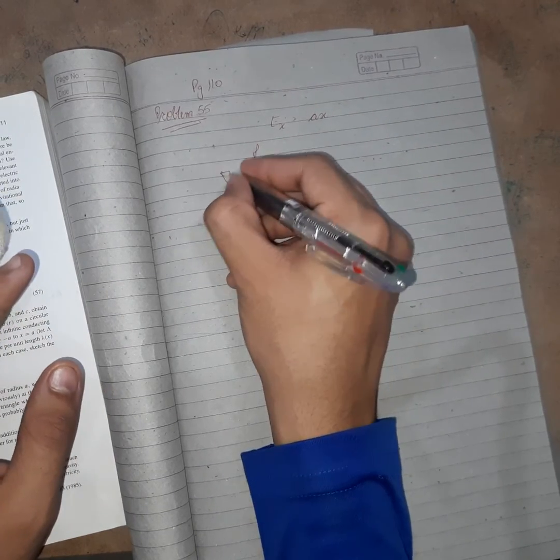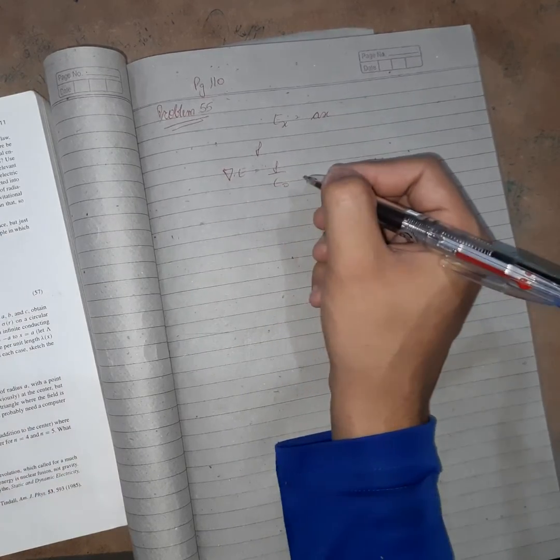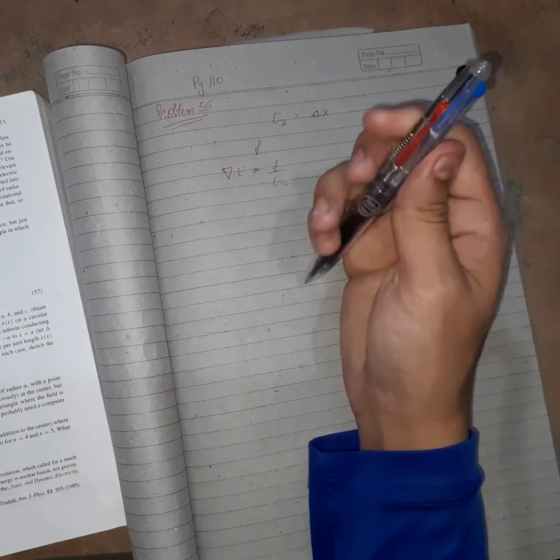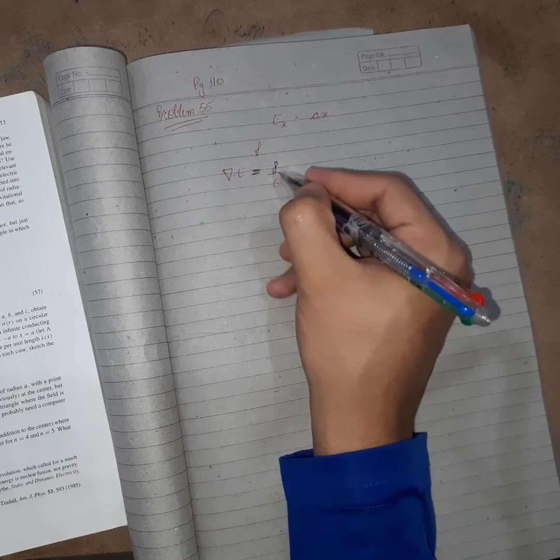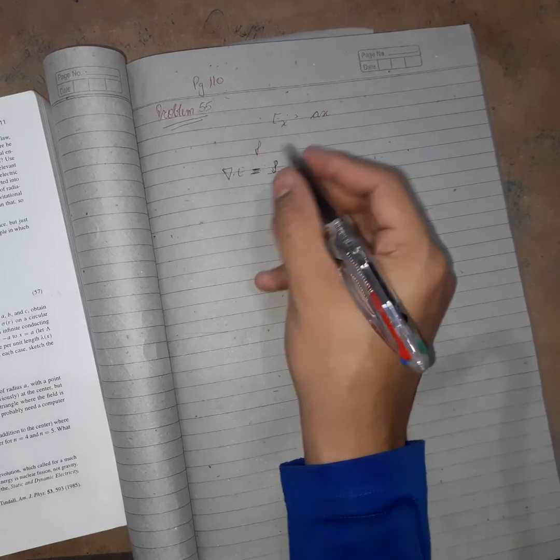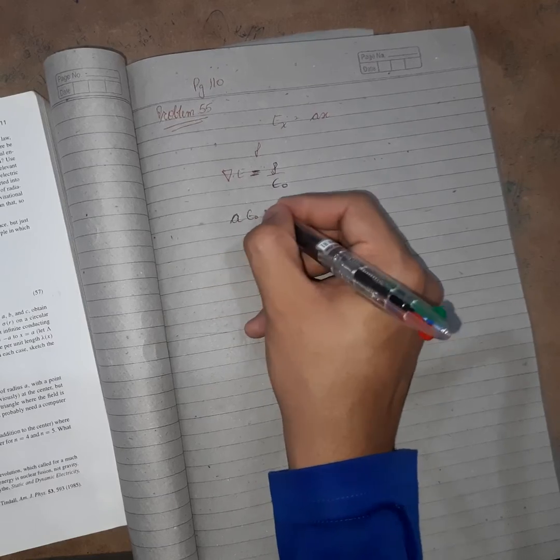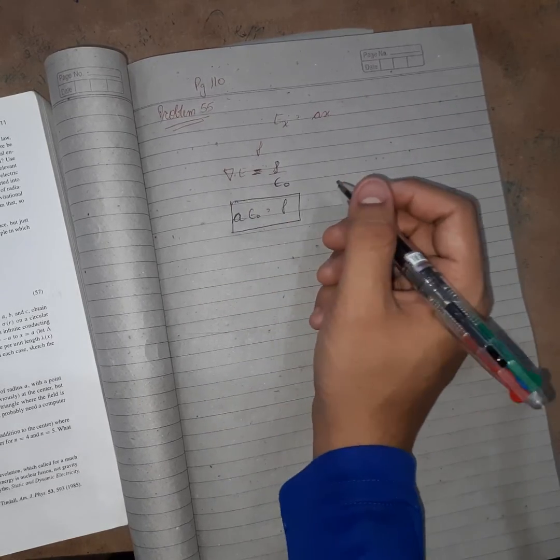We know that del dot E is equal to rho by epsilon. So calculating del dot E, d by dx, simply a will come, and multiplied by epsilon, this will be the charge density.